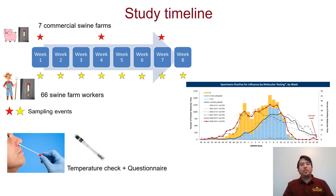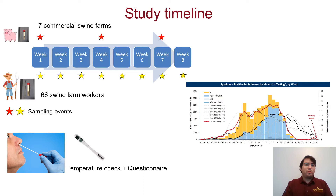To meet our specific aims, we enrolled seven commercial sow farms that had a history of influenza problems in the pigs. Workers voluntarily enrolled to participate, totaling 66 swine farm workers. The study consisted of eight weeks during which farm workers took samples twice a week before and after entering the farm. The sampling points for humans are depicted on the yellow stars, and the red stars represent sampling points for pigs. These farms had a history of influenza positivity in the pigs.